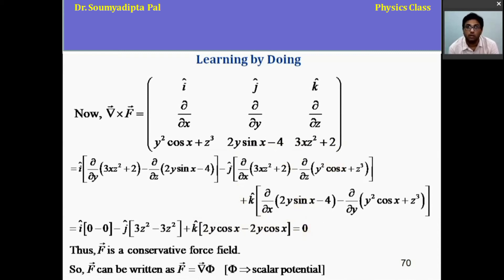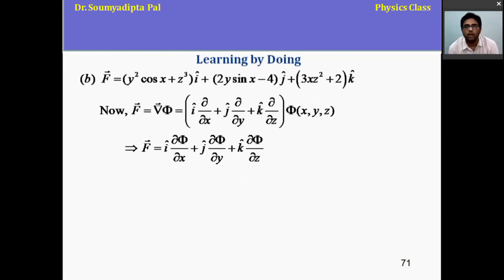And for that, it can be written as F equals to del phi or gradient of phi. Now, we have to find out that scalar potential associated with the given conservative field. So as F equals to gradient of phi and the form of del operator is like this, i cap del del x plus j cap del del y plus k cap del del z, we can write this equation.